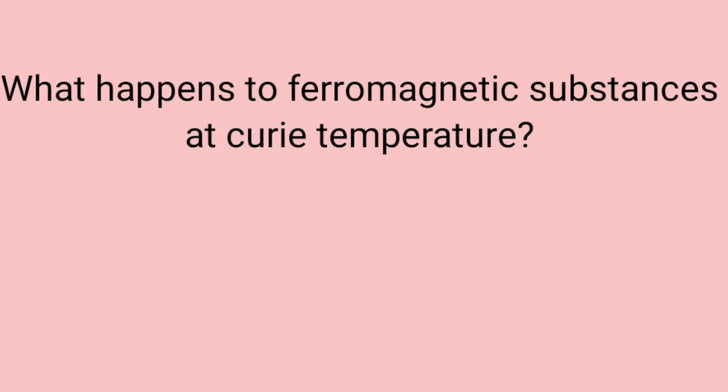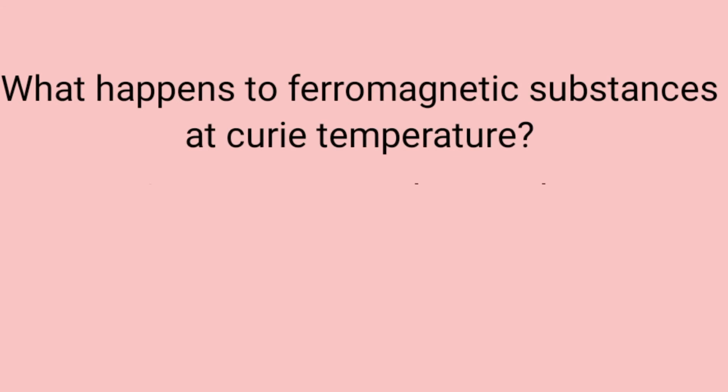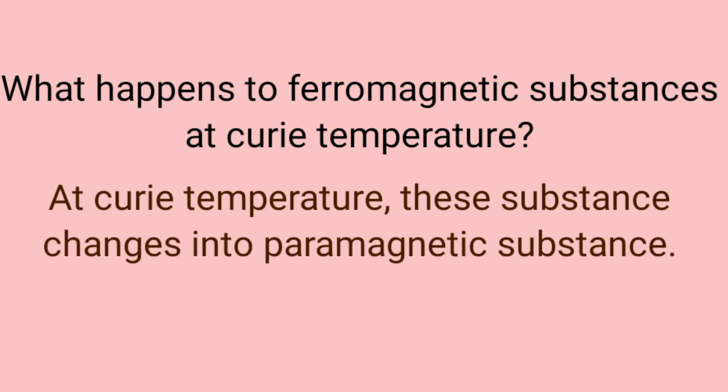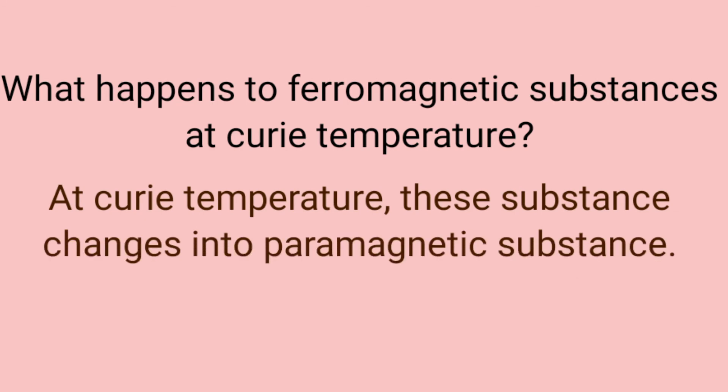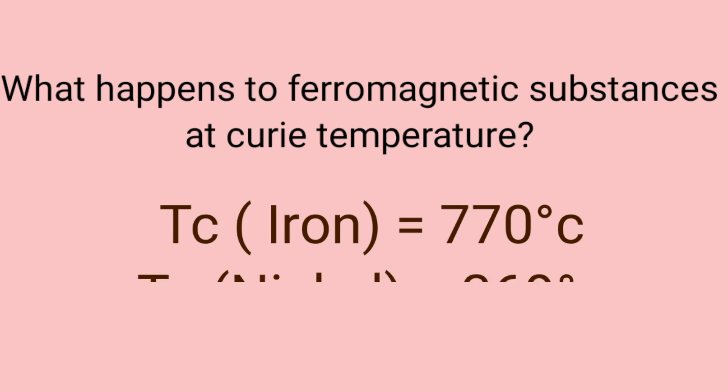What happens to ferromagnetic substances at the Curie temperature? At the Curie temperature, these substances change into paramagnetic substances. The Curie temperature for iron is 770 degrees Celsius and for nickel it is 369 degrees Celsius.